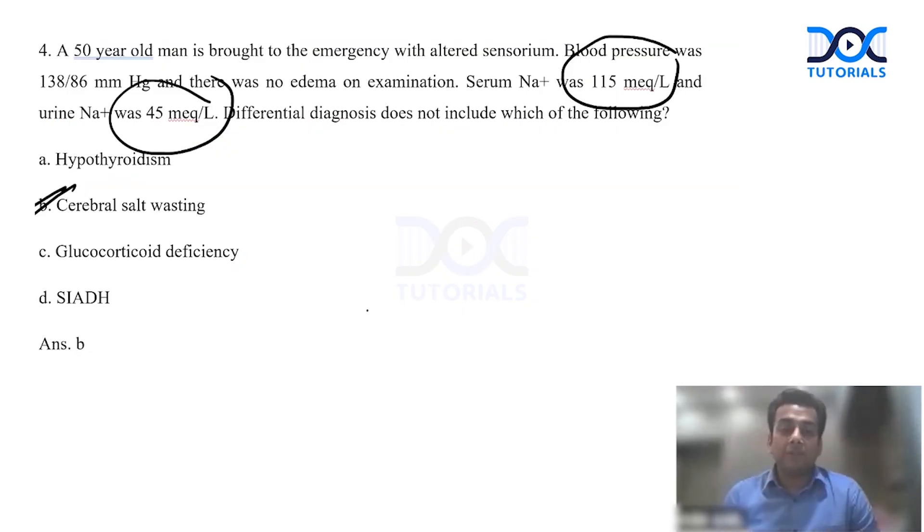Now in the index question you had a true hyponatremia, but the urine sodium was more than 20, but the patient was euvolemic and normotensive. So the answer is SIADH. Most common cause could be hypothyroid, could be glucocorticoid, but this is cerebral salt wasting where you expect the BP to be low and you expect the urinary sodium to be high and you expect a volume status where the patient will be volume depleted.